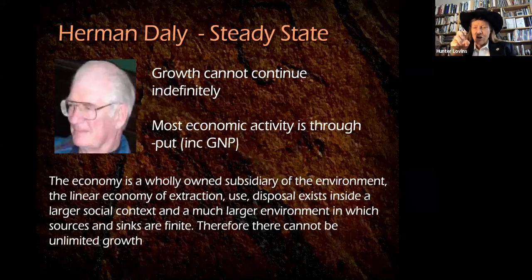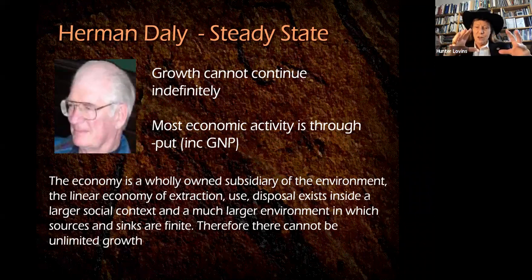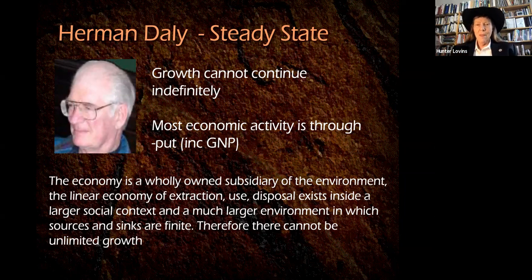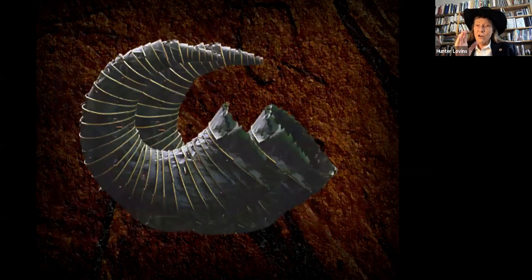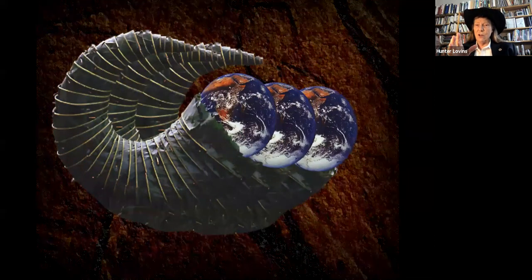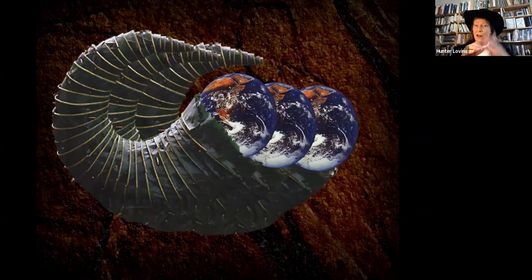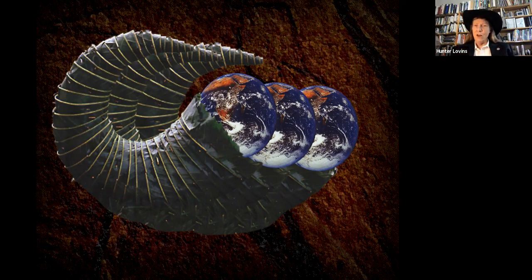Herman said the economy is the wholly owned subsidiary of the environment. The linear extraction of stuff, use, and disposal exists within the social context and within the larger environmental context. Therefore it is a corollary of the round earth theory that we cannot have infinite growth. If we continue to grow in the conventional way, we will need at least three more Earth's worth of material stuff to give everybody on Earth as much stuff as they might desire. There is plenty on Earth to provide everyone with what they need, but not to provide everyone's greed.